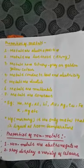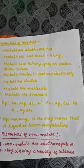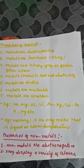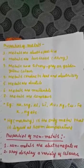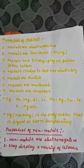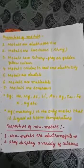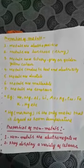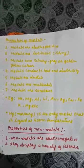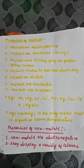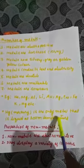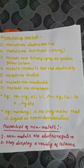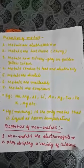Metals are electropositive — for example Na⁺, Ca²⁺. Metals are lustrous, meaning they are very shiny, and are generally silvery-gray or golden-yellow in color. Metals conduct heat and electricity. Metals are ductile, meaning we can draw metal into thin wires. Metals are malleable, meaning we can make thin sheets of metal. Metals are sonorous, meaning they produce a ringing sound like school bells. Examples include sodium, magnesium, aluminium, lithium, gold, silver, copper, iron, potassium, and mercury. Mercury is the only metal that is liquid at room temperature; otherwise metals are generally found in solid form.